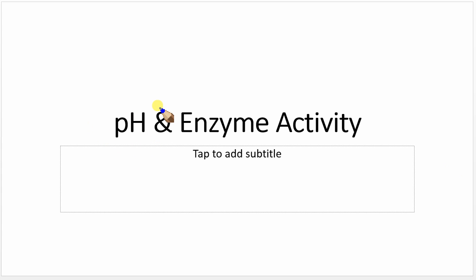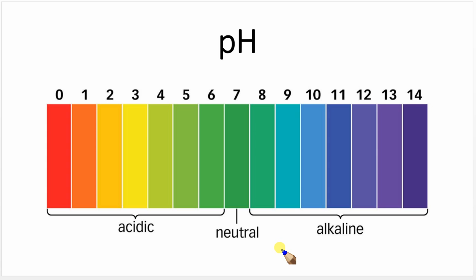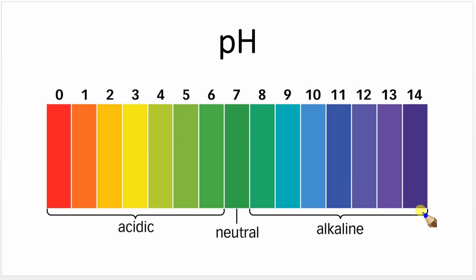This video is looking at how pH affects the rate of an enzyme-catalyzed reaction. pH describes the environment. The environment could be neutral — a pH of 7 — which means it's neither acidic nor alkaline. As the pH number drops, the environment becomes more and more acidic. If the pH increases, the environment becomes more and more alkaline.